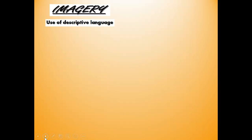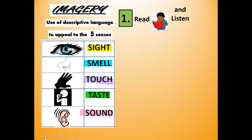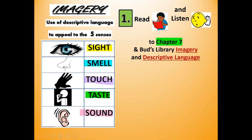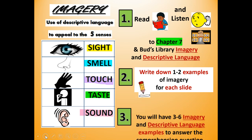Imagery is the use of descriptive language. It gives you an image to appeal to the five senses. Our five senses are: sight — what does it look like? Smell — what does it smell like? Touch — what does it feel like? Taste — what can you taste? And sound — what do you hear? You're going to read and listen to parts of Chapter 7 where Bud describes the library using imagery and descriptive language, and write down one to two examples for each slide. Finally, you will have three to six imagery examples to answer the comprehension question.